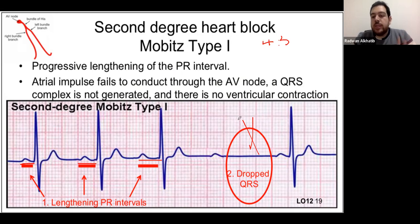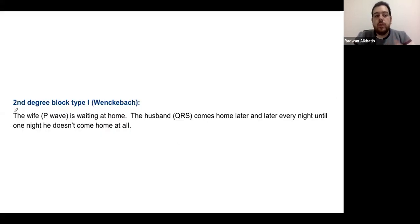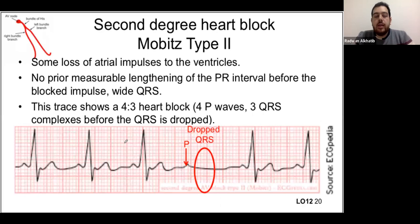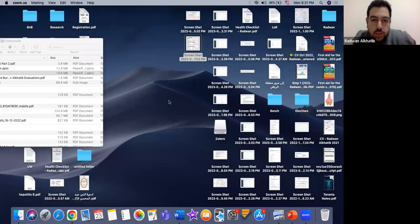Distinguishing sinus bradycardia from junctional rhythm: in sinus bradycardia you have a normal PQRST pattern but heart rate below 60, with the P wave positive. In junctional rhythm, the most important feature is that P waves are inverted. In a sinus rhythm, P waves must be positive at least in certain leads — mainly lead two. In junctional or any rhythm starting from below the SA node, the P wave will be inverted or absent.